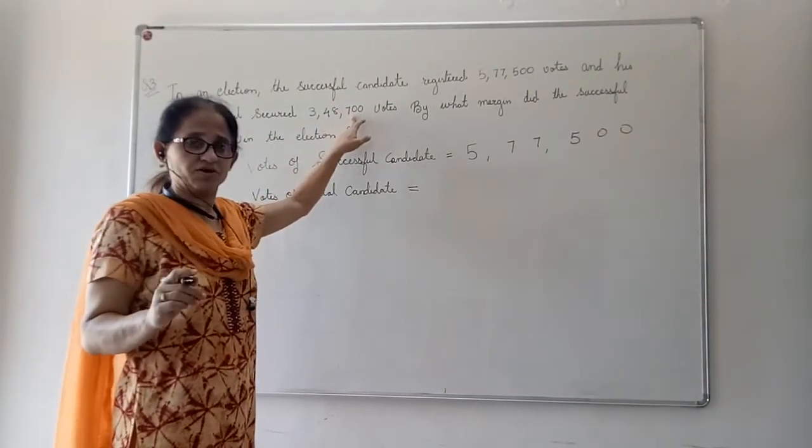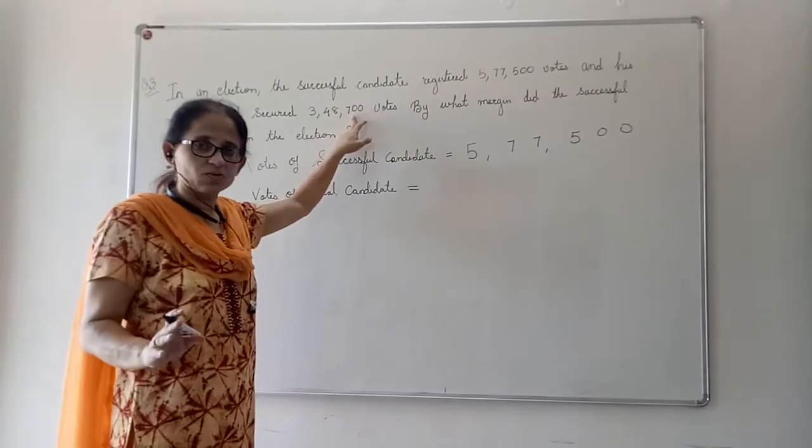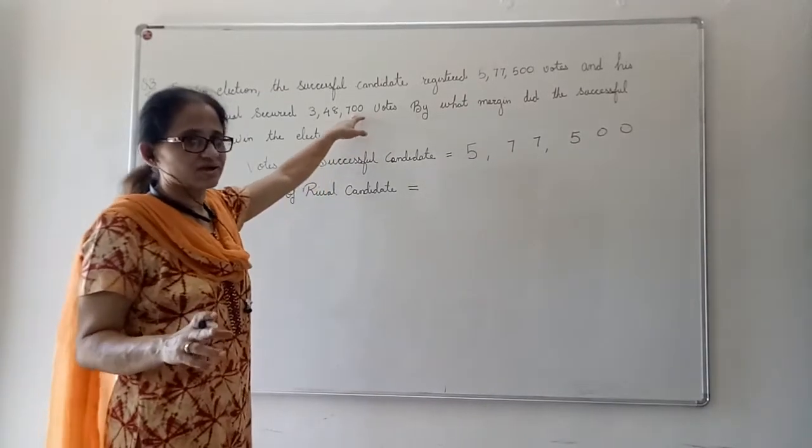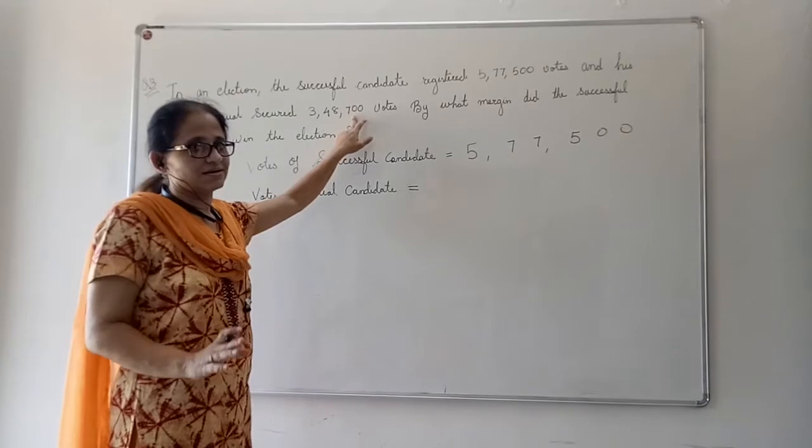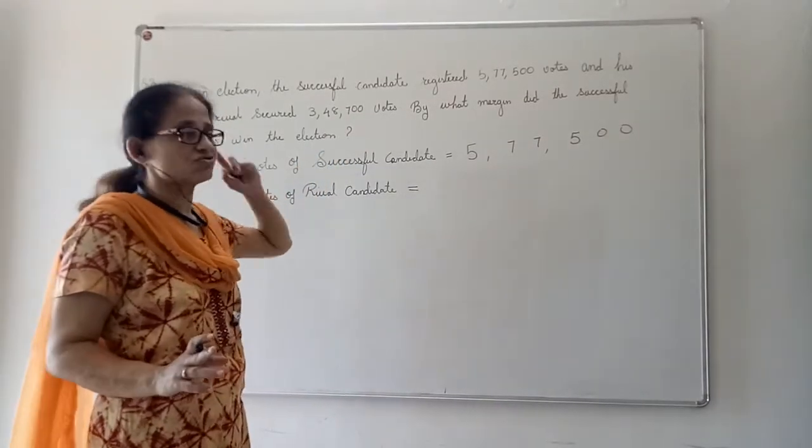We know the operation involved is subtraction. In subtraction, or in addition, always we make sure that ones should be written under ones, tens under tens, hundreds under hundreds, thousands under thousands and so on.